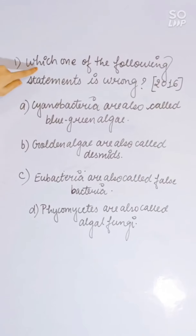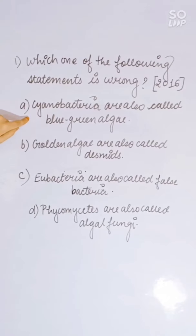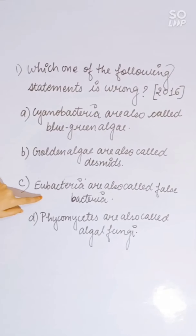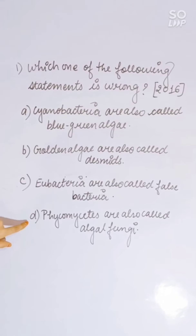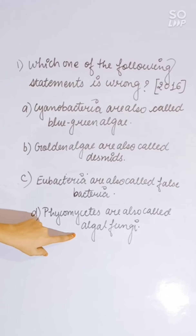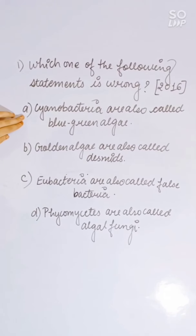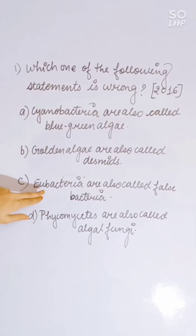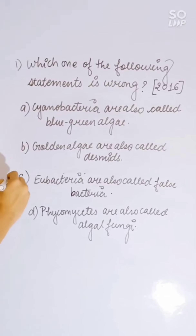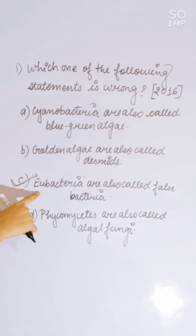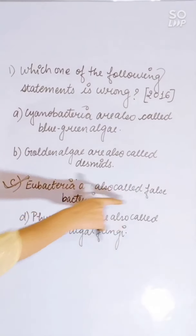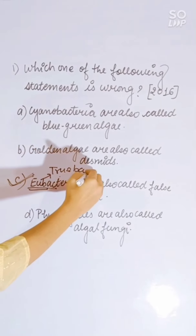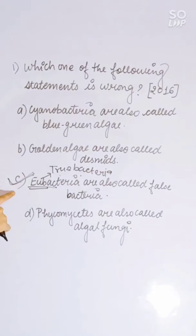2016 question: Which statement is wrong? First: Cyanobacteria are also called blue-green algae. Second: golden algae are also called desmids. Third: Eubacteria are also called false bacteria. Fourth: Phycomycetes are also called algal fungi. The wrong statement is the third — Eubacteria are not known as false bacteria; they are known as true bacteria.